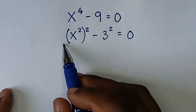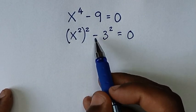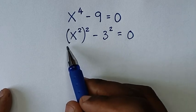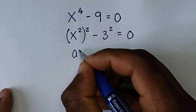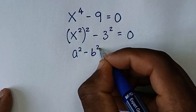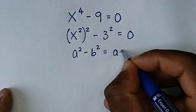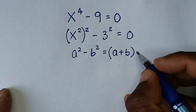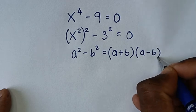Now this is in the form of a difference of two squares, so we apply the difference of two squares rule, which is a² minus b² is equal to (a + b)(a − b).